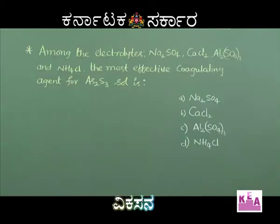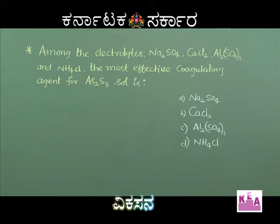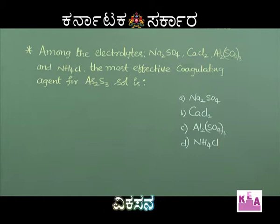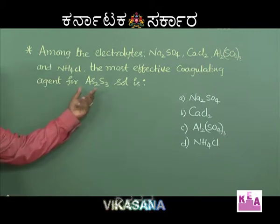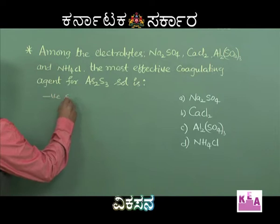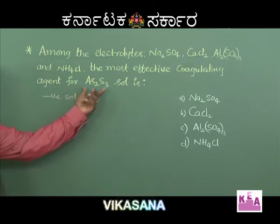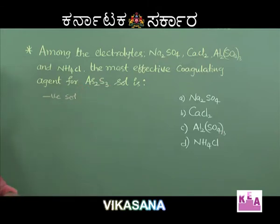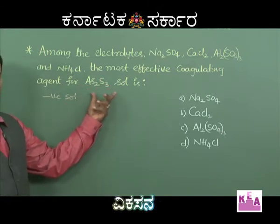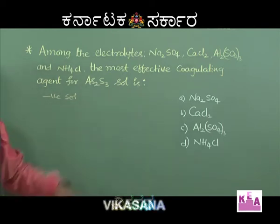The next question: among the electrolytes sodium sulphate, calcium chloride, aluminium sulphate, and NH₄Cl, the most effective coagulating agent for AS₂S₃ sol is asked. AS₂S₃ sol is a negative sol because of adsorption of S²⁻ on the surface of colloidal particles. For coagulation of a negative sol, you need a cation from the electrolyte; that cation is called the active ion.